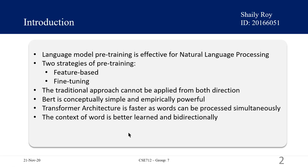Language model pre-training has been shown to be effective for improving many natural language processing tasks. These include sentence-level tasks such as natural language inference and paraphrasing, which aims to predict the relationship between sentences by analyzing them holistically, as well as token-level tasks such as named entity recognition and question answering, where models are required to produce fine-grained output at the token level.